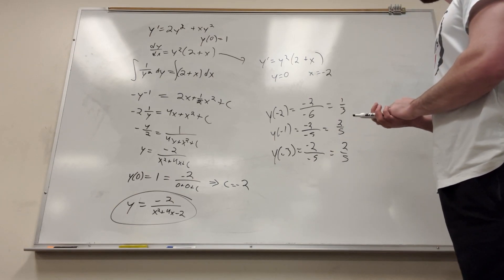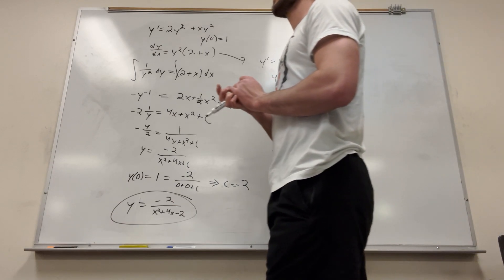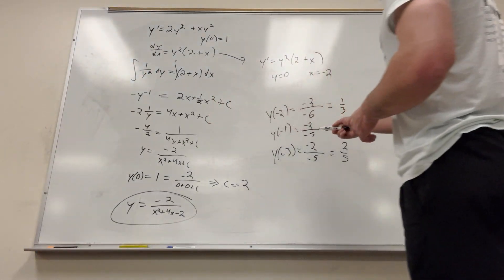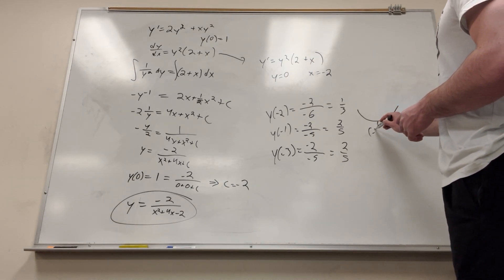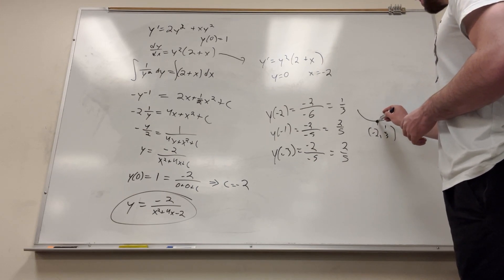There's one. 2 fifths is, God I'm brain dead today. I thought 2 fifths was smaller than 1 third. I don't know why. So that means that it's going to be a relative minimum. It's going to look like this. And this is negative 2, 1 third. So that's where it obtains a relative minimum. And there you go.